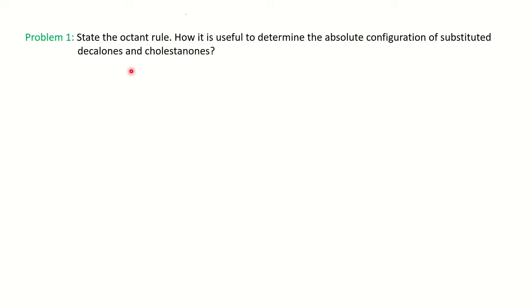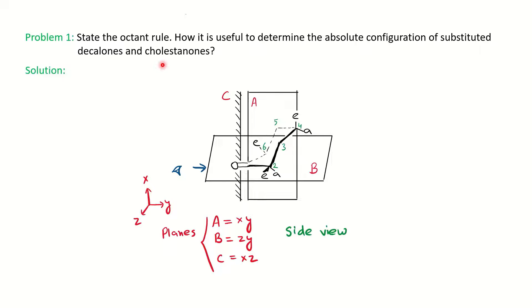We will start with the first question: state the Octant Rule and how it is useful to determine the absolute configuration of substituted decalones and cholestanones. This question is from your previous year MSC question paper. Since it comes in the 4 to 5 marks category, you have to first define what is the Octant Rule. When they ask about the absolute configuration of the decalone and cholestanone, you have to take one example of each.